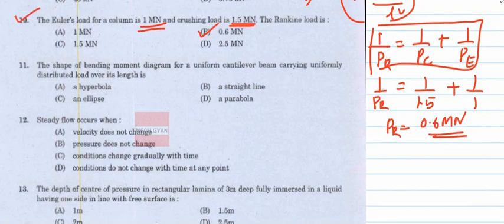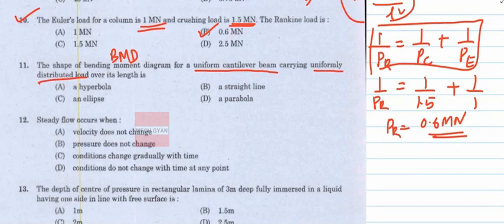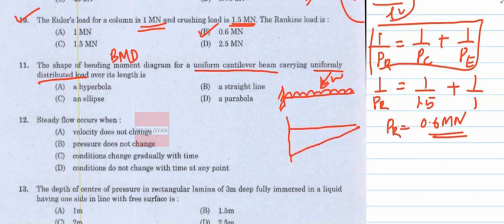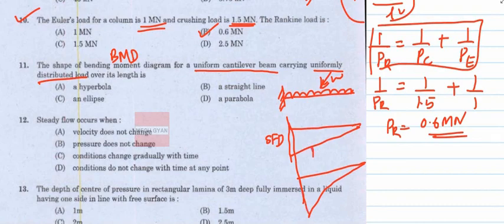Question 10: The shape of the bending moment diagram for a cantilever carrying a uniformly distributed load (UDL). For a cantilever with UDL W per unit meter, the shear force diagram is linear. When the shear force diagram is linear, the bending moment diagram is one degree higher, which means it is parabolic. The answer is option B.